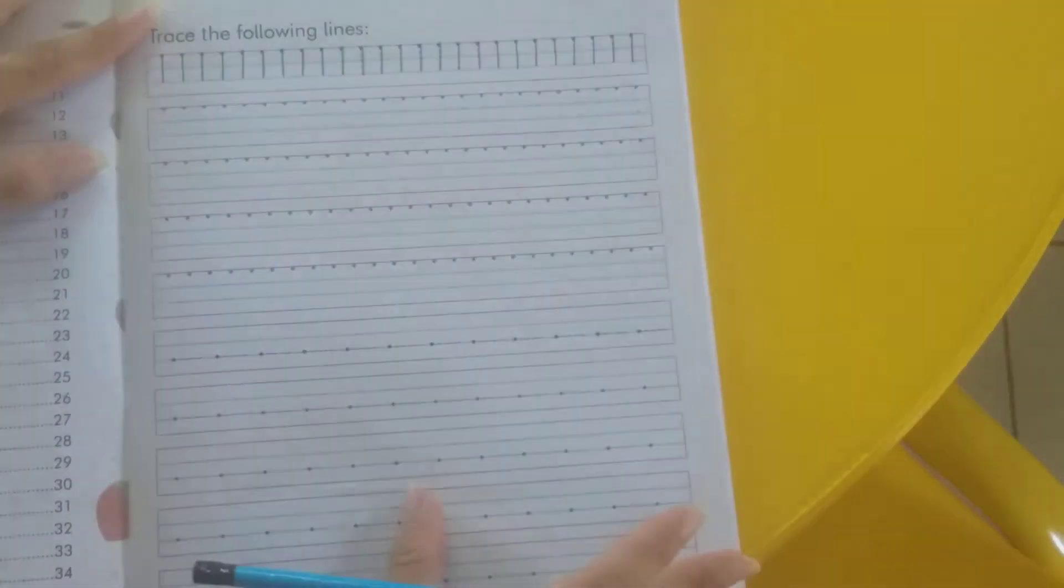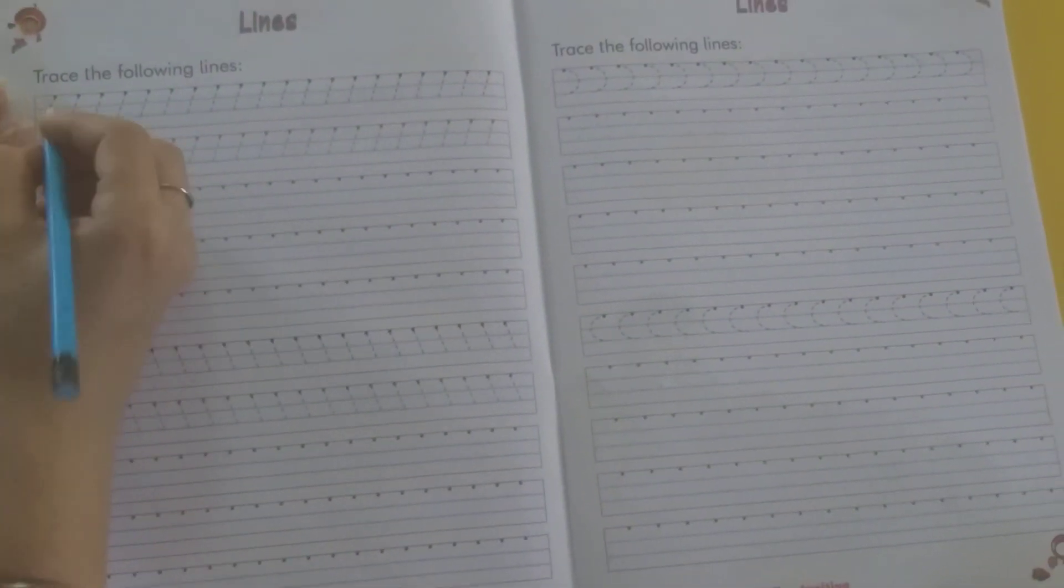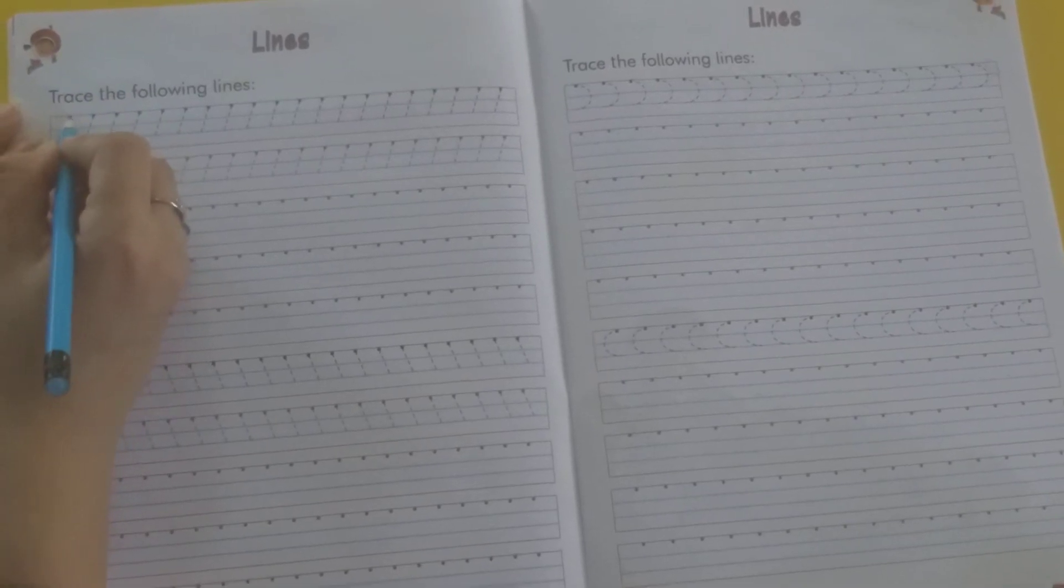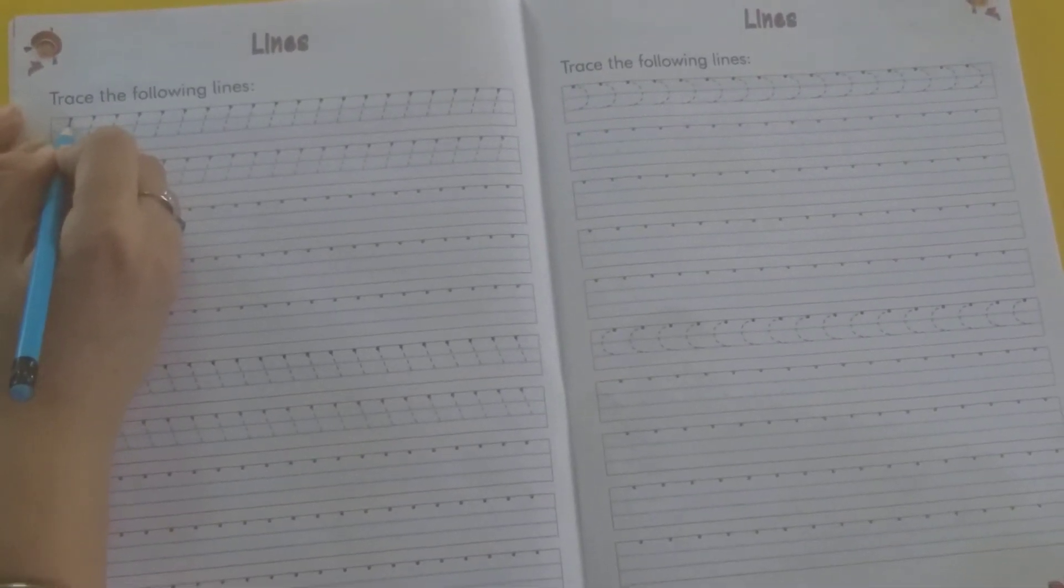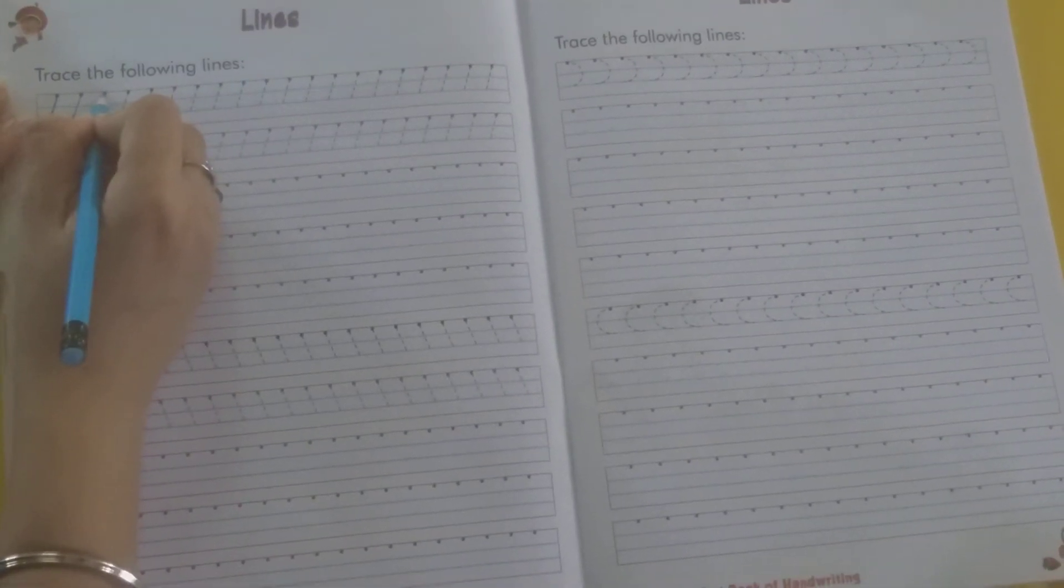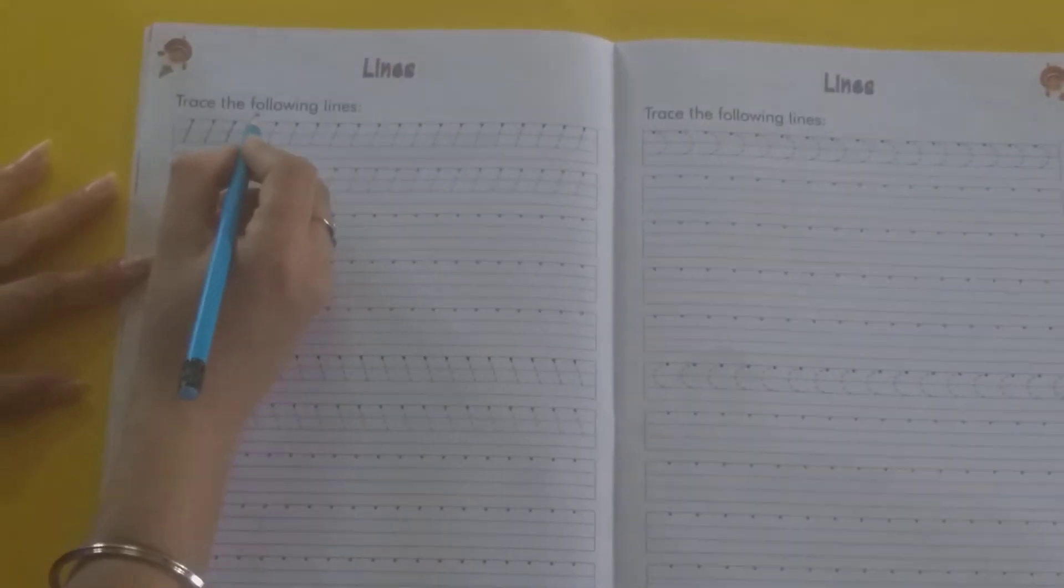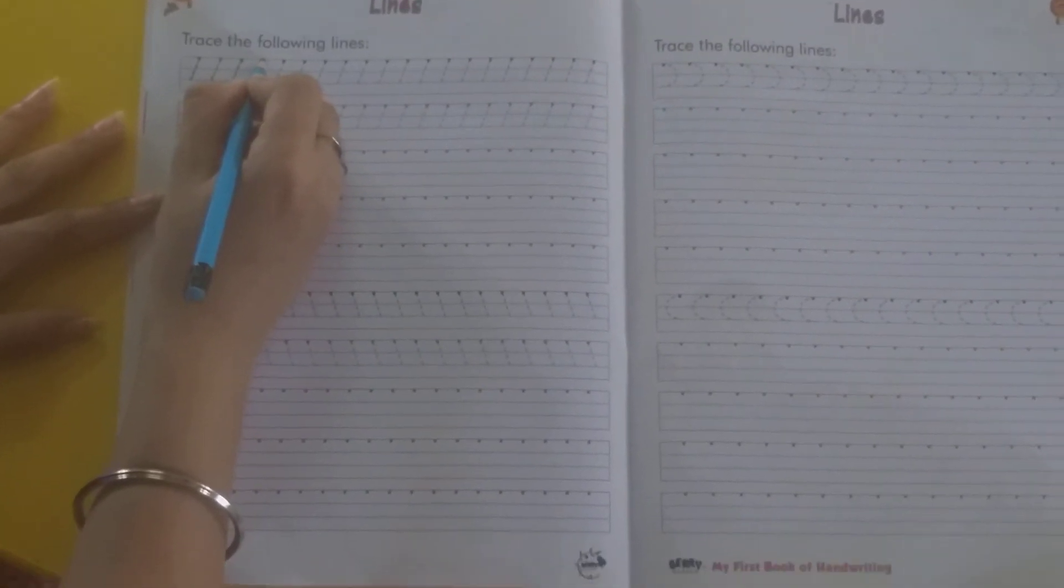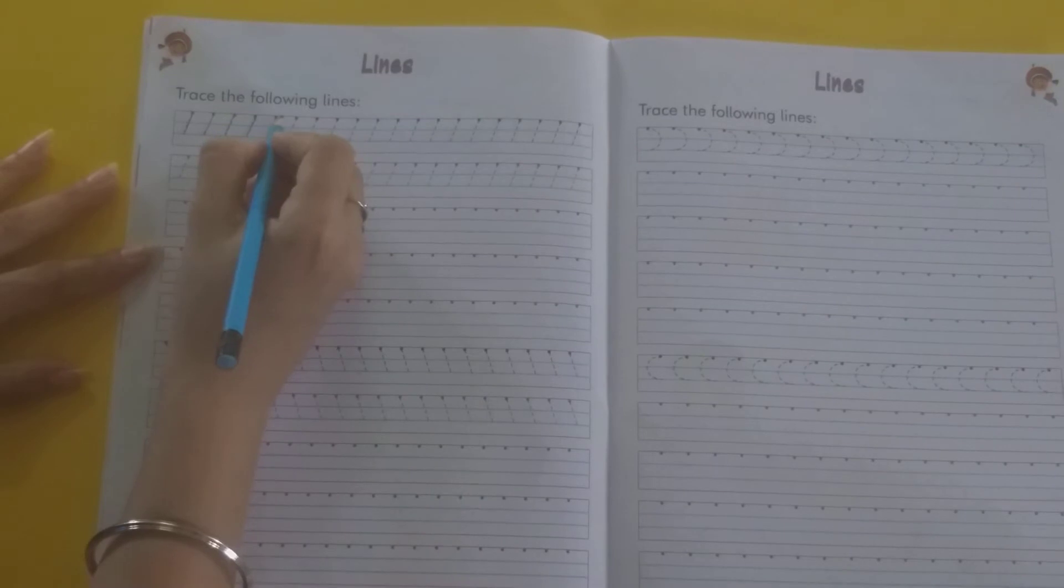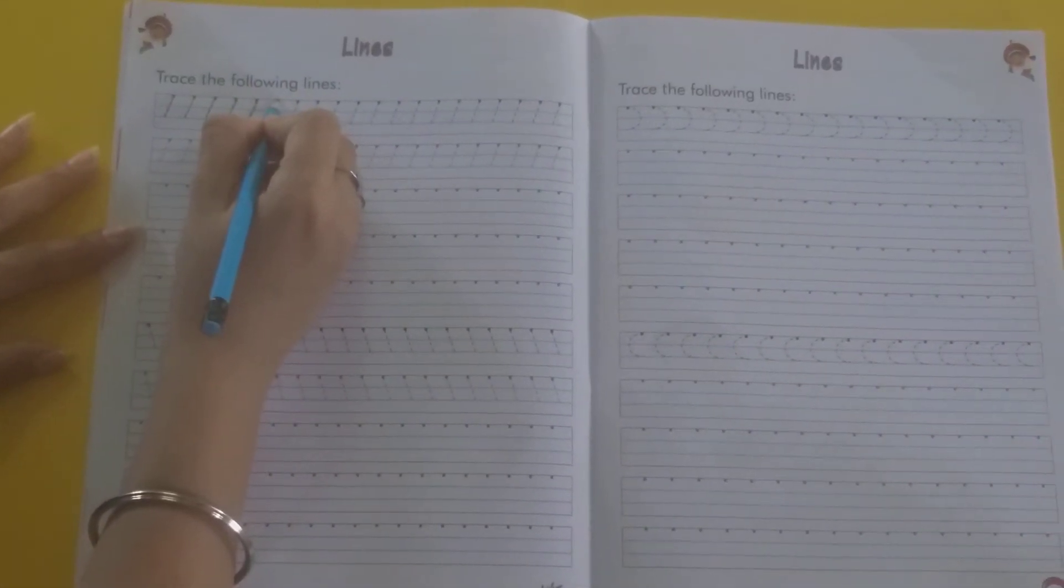Now move to the next page. Page number 6. Ye kya hai? Trace the following lines. Slanting lines. Abhi mein slanting lines kar rahi hun. Ye kaunsi slanting lines hai? Right to left. Right to left hai ye slanting lines.